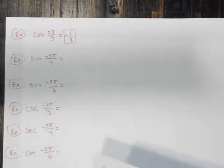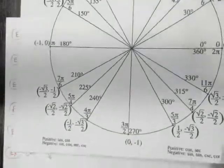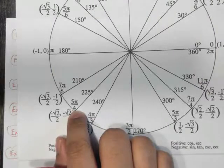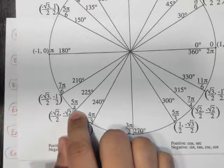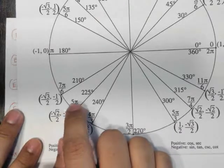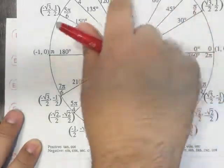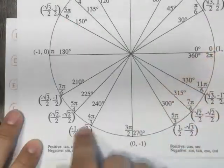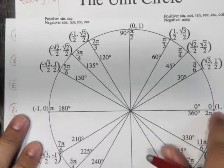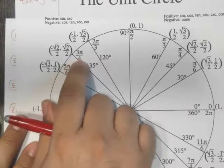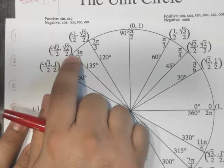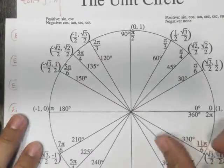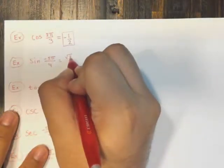Now let's take a look at the sine of negative 5π/4. First, let's think about where 5π/4 is — it's right here at 225 degrees. But since we have negative 5π/4, instead of going counter-clockwise 225 degrees, we're going to go clockwise 225 degrees, starting at 0 and swinging backwards. That puts us at this point, which is the coterminal angle for negative 5π/4. Since we're talking about sine — the y-value — the answer is simply square root of 2 over 2.